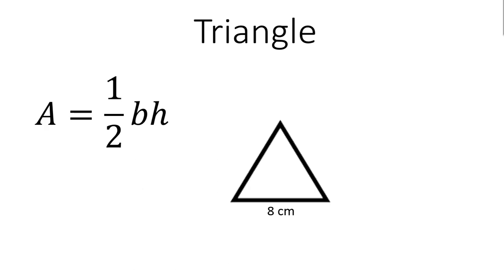Next I have a triangle. The area of a triangle is equal to one half base times height. I have the base labeled here, which is 8 centimeters. The height is going to be my dashed line, which is 7 centimeters.